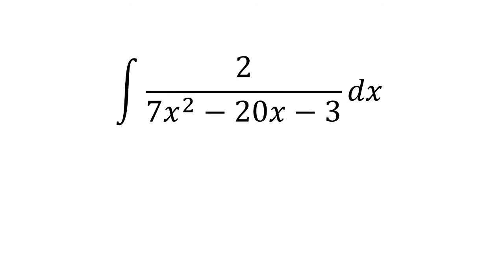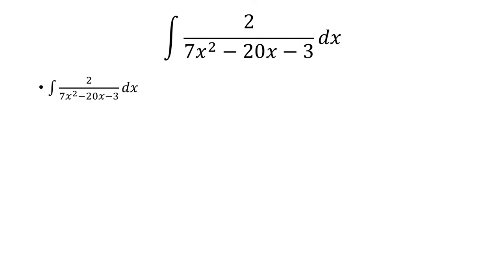In this video, we'll be solving the integral 2 over 7x squared minus 20x minus 3. First thing we're going to do is factor out the denominator. We know that it factors into 7x plus 1 times x minus 3.